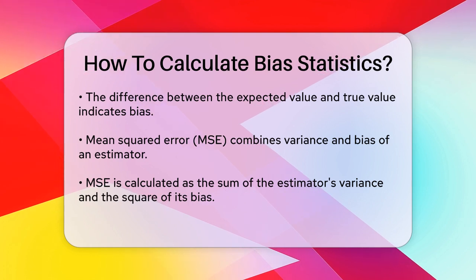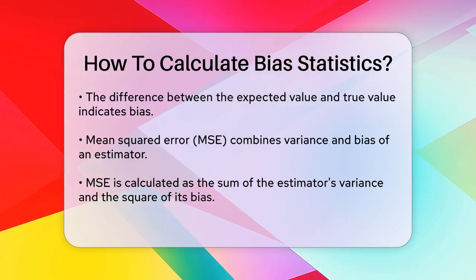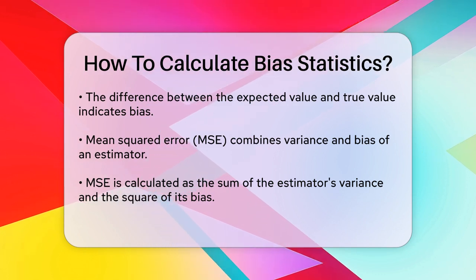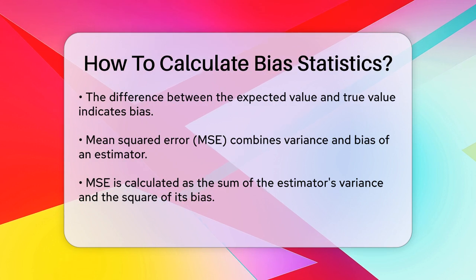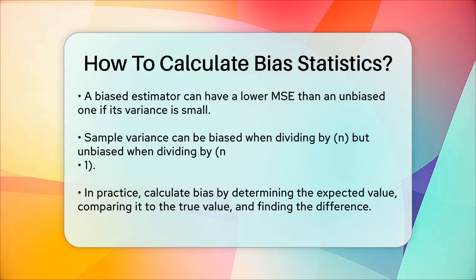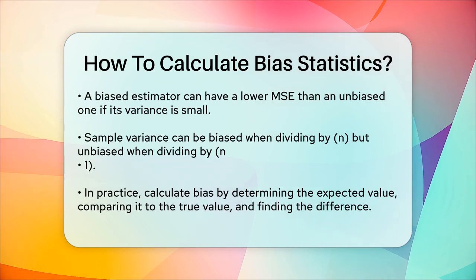For instance, when calculating the sample variance, the naive estimator that divides by n is biased. However, dividing by n minus 1 gives an unbiased estimator. But in some cases, using a biased estimator with a smaller variance can result in a lower MSE overall.